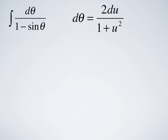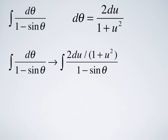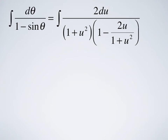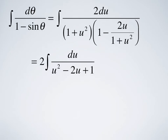Remember, dθ = 2du/(1+u²). So the integral of dθ/(1-sinθ) goes to the integral of 2du/(1+u²) over 1 minus sinθ. Now we need to replace the sinθ expression, which is 2u/(1+u²) by definition. We get the integral of 2du divided by (1+u²) times (1 - 2u/(1+u²)). Now we just do a little bit of algebra, pulling in the 1+u² term and multiplying it by the other term on the bottom.